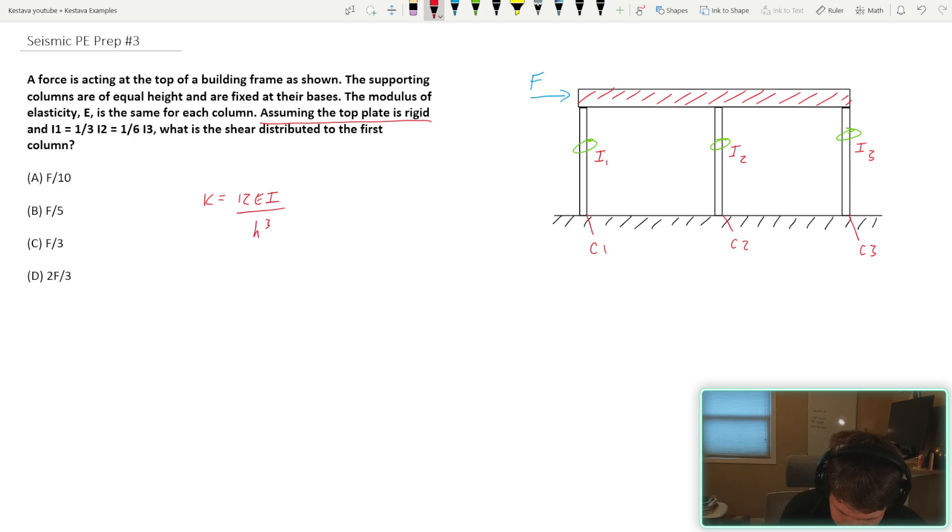E being your modulus of elasticity. That's how well a material can stretch. That comes down to material properties, mechanics of materials when you're in school. Your I, your moment of inertia for your shape. That depends on the geometry, the cross section of your column. And then H being the actual height of your column.